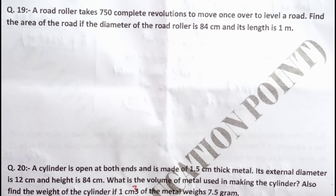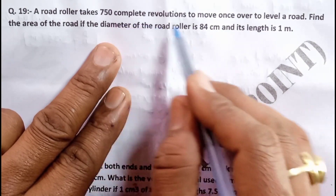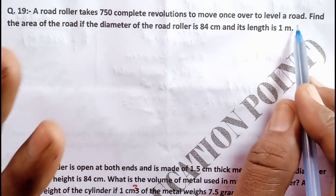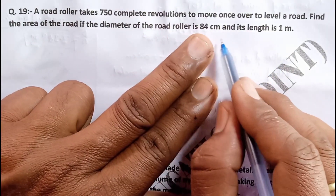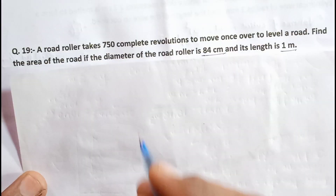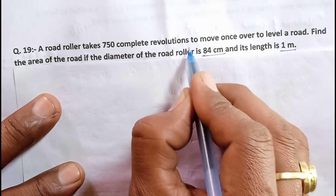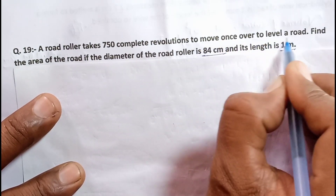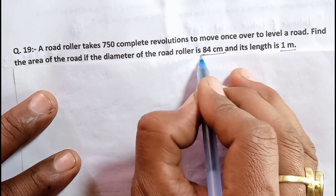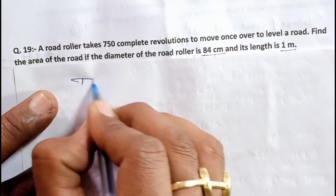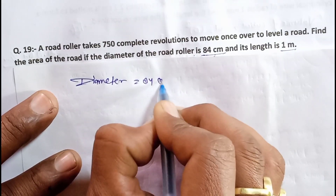Question number 19: A road roller takes 750 complete revolutions to move once over to level a road. Find the area of the road if the diameter of the road roller is 84 cm and its length is 1 meter. Note: diameter = 84 cm.